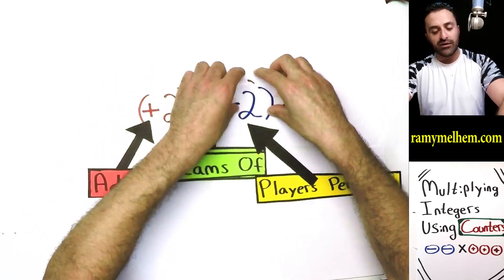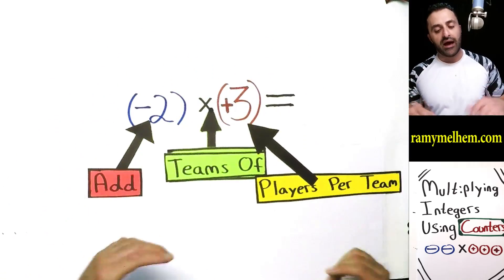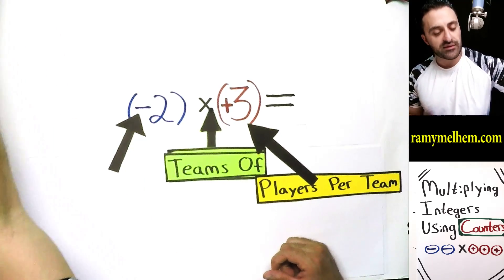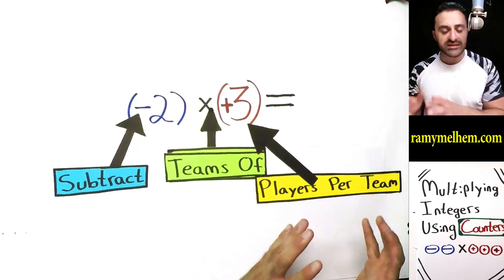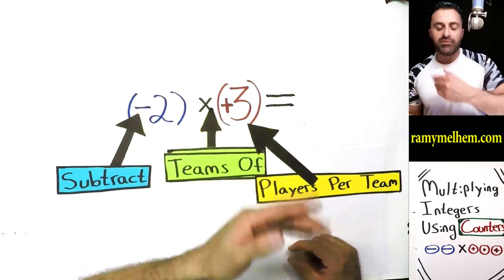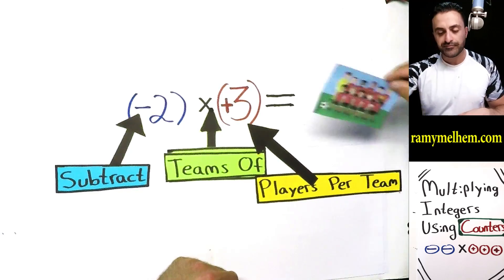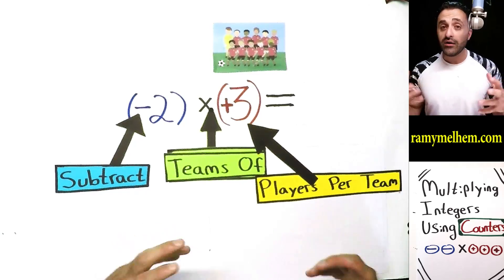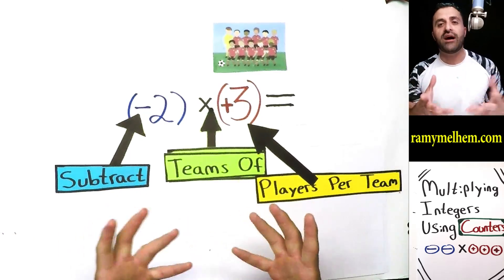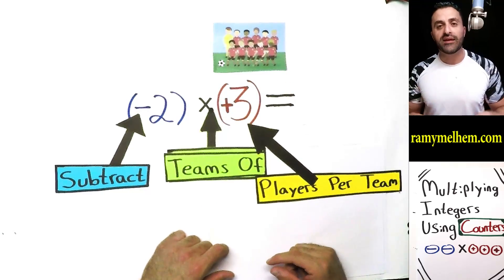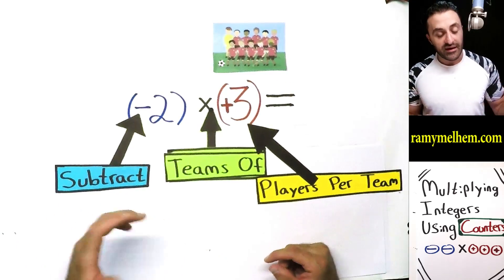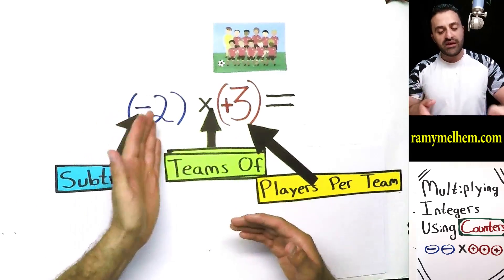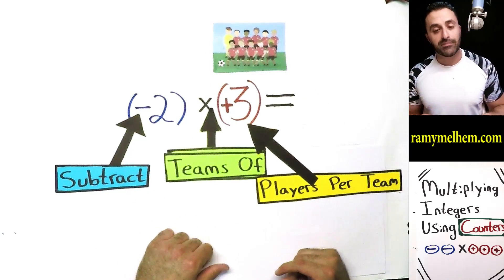What if we switched that first number? Look at that symbol — it doesn't say 'add' anymore, instead it says 'subtract.' Subtract two teams of positive three. Those are the good guys — we're talking about three red players. Subtracting two teams of positive three off the basketball court that starts with nothing.